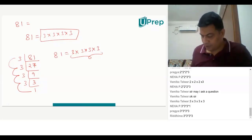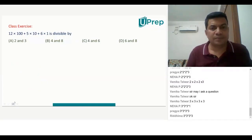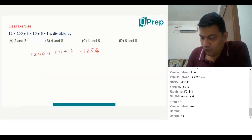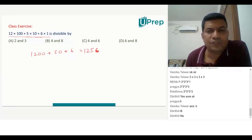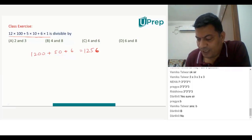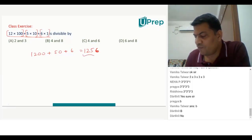Let's get on with the problems now. Solve this class exercise. Whenever we have a calculation like this, we use the method wherein the product is taken care of first. So 12 into 100 is done first, 5 into 10 is done here, and 6 into 1. Basically, 12 into 100 is 1200, plus 5 into 10 is 50, plus 6 into 1 is 6. We add them up and get 1256.